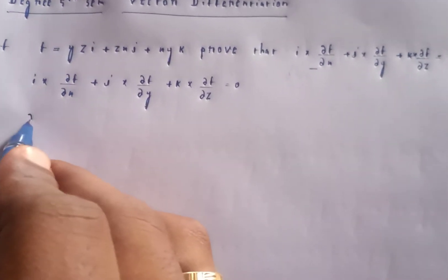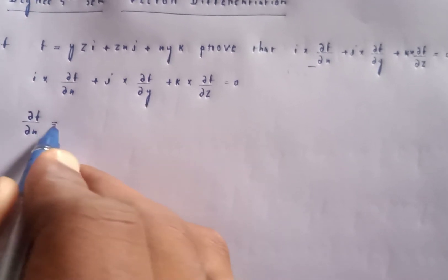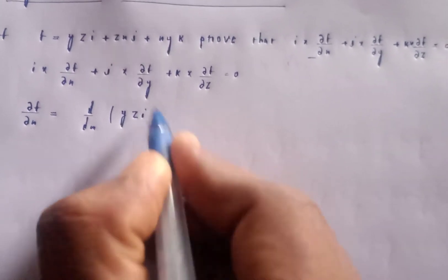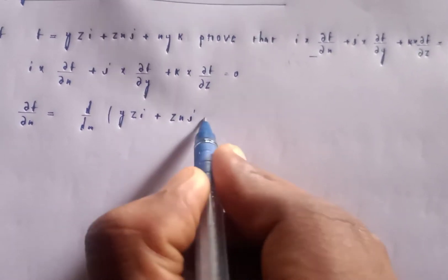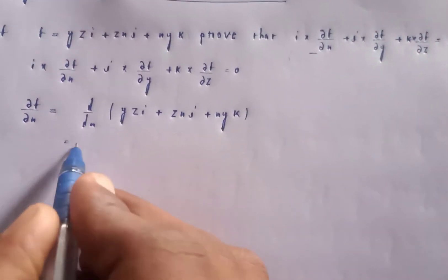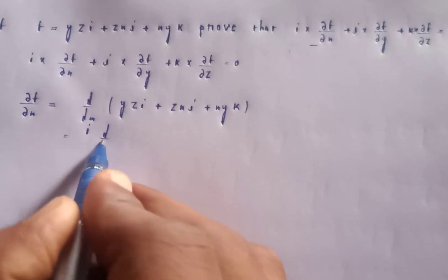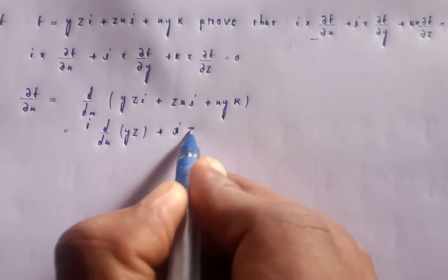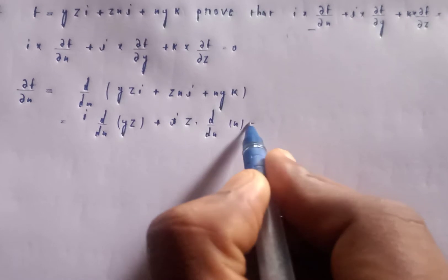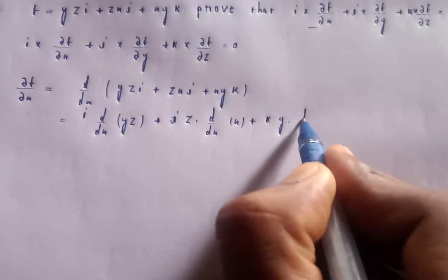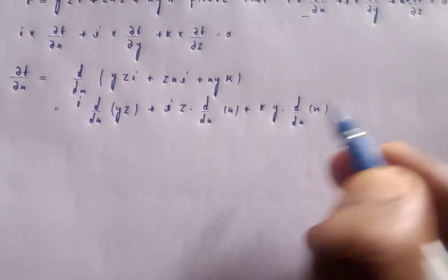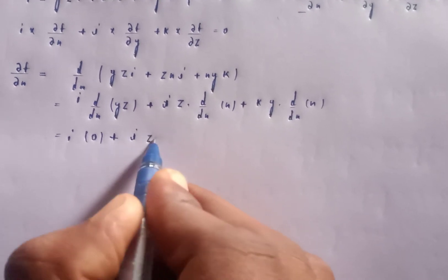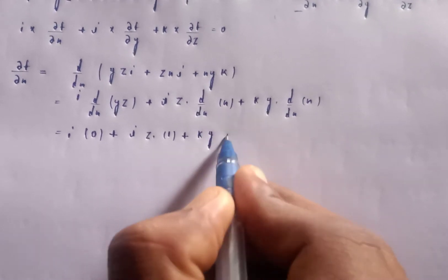First, compute ∂f/∂x. Taking d/dx of f, that is d/dx of yzi plus zxj plus xyk. With respect to x, yz is constant, so d/dx of yz gives zero for i component. For j, d/dx of zx equals z. For k, d/dx of xy equals y.